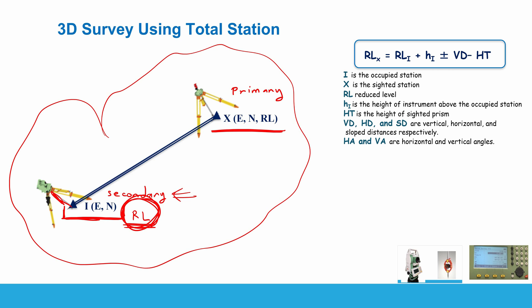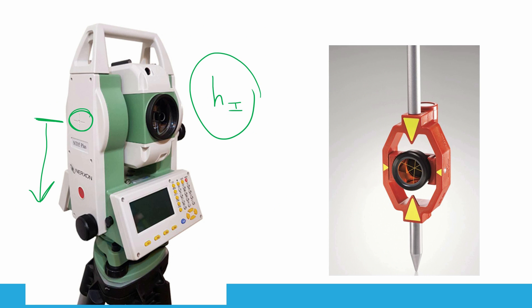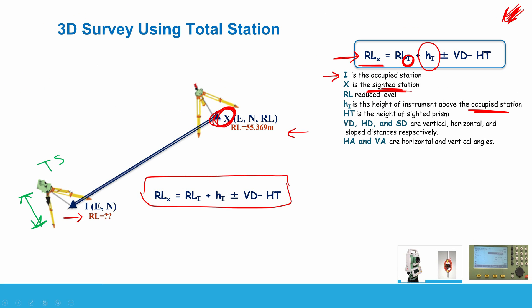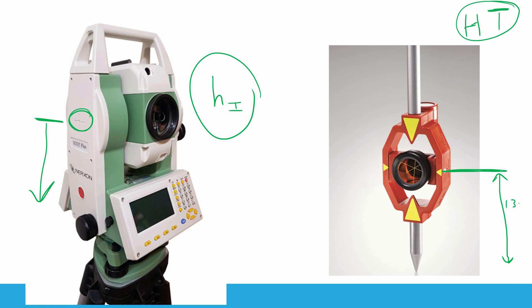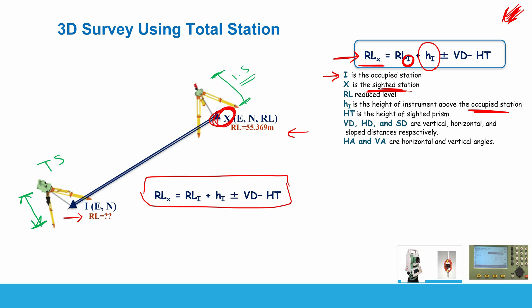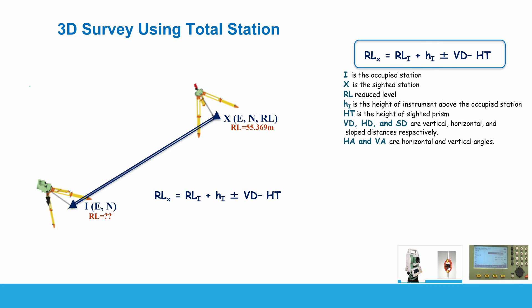HI is the height of the instrument above the occupied station. HT is the height of the prism, measured from the center line of the prism to the ground using a tape measure. For a mini prism the height might be in centimeters — for example 13 cm — whereas for a prism set up over a tripod the height would be more than 1 meter. Whatever prism you use, measure the height from the center line of the prism to the ground.